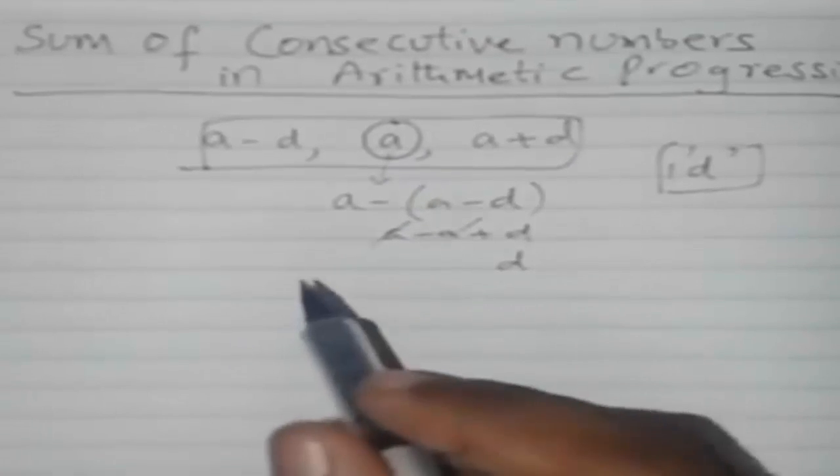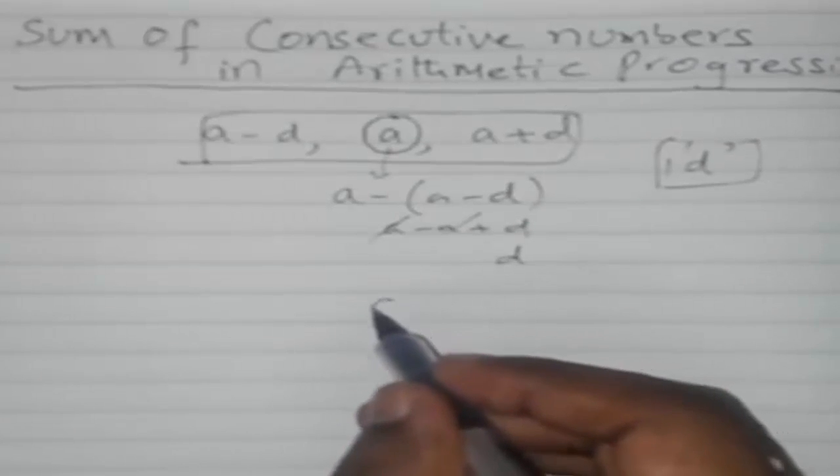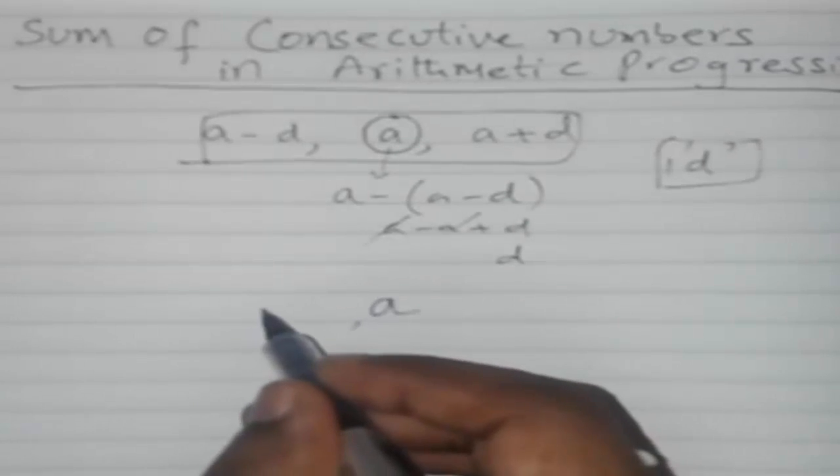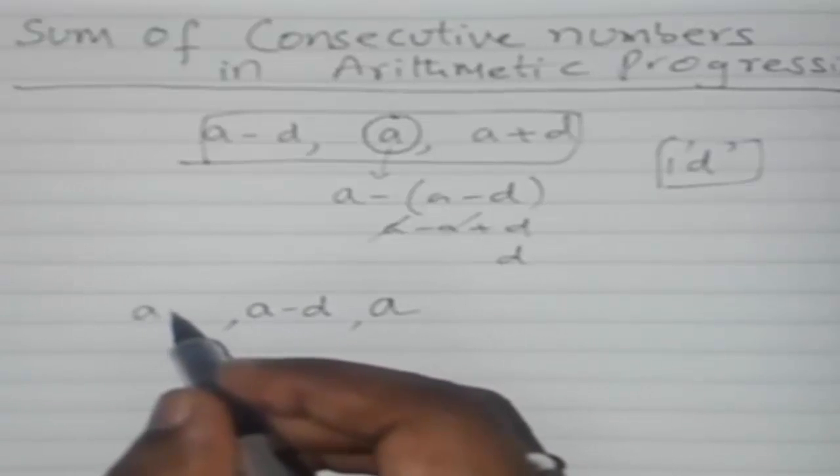Likewise, if they ask you sum of five terms of AP, then remember in the middle it should be 'a'. Since the difference is 1d, then there should be 1d, means it should have 2d here.